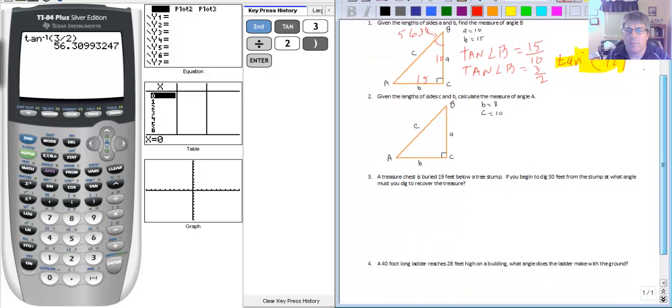And our second sample problem. Given the lengths of the sides C and B calculate the measure of angle A. So we want to find A. We know C is 10 and B is 8. So we're working from angle A. So we have the adjacent and the hypotenuse.